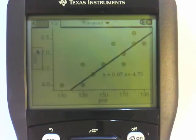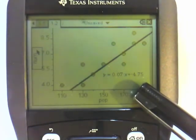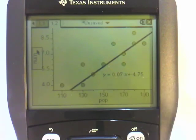You can see the equation right here. Okay, so the equation for this is 0.07x take away 4.75. So that's how easy it is on a calculator.